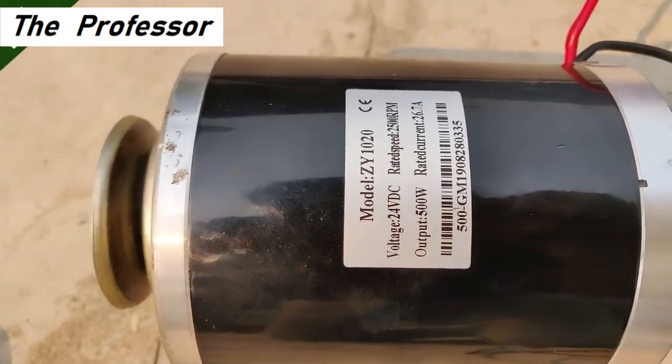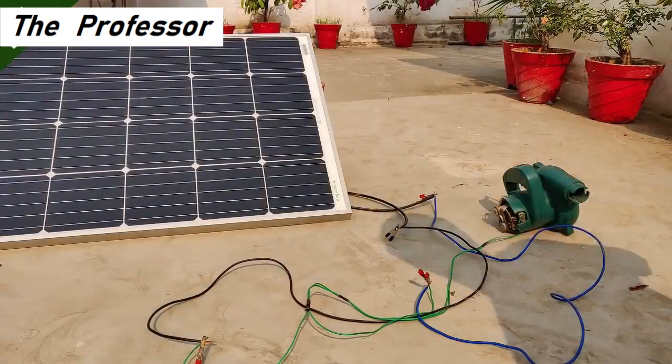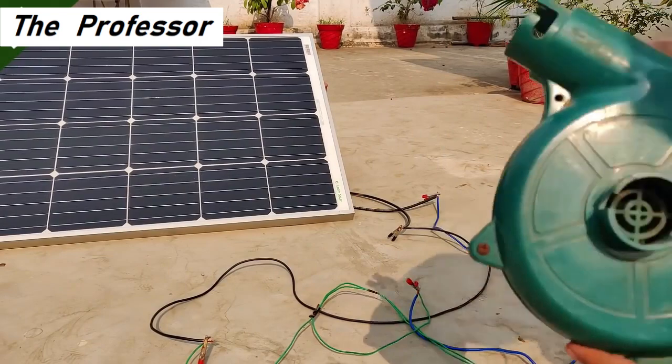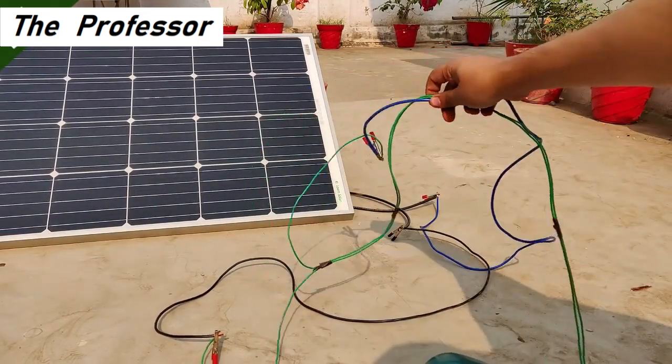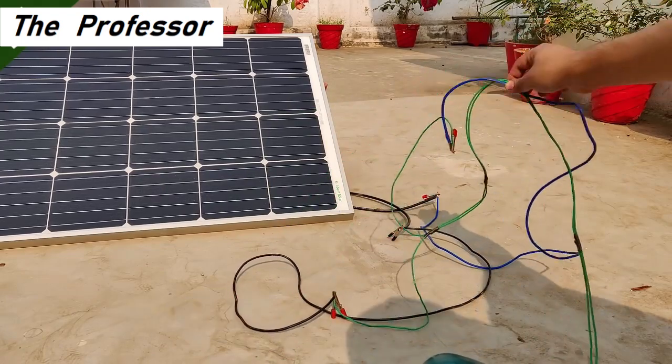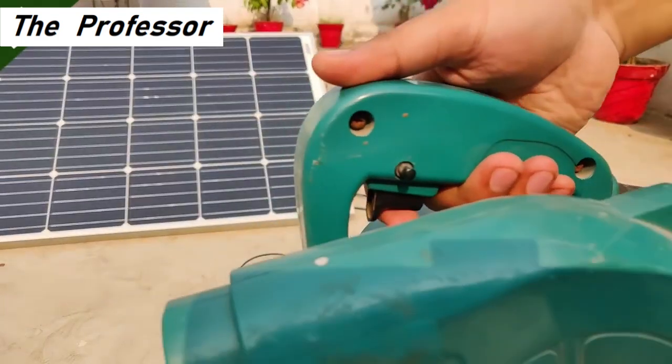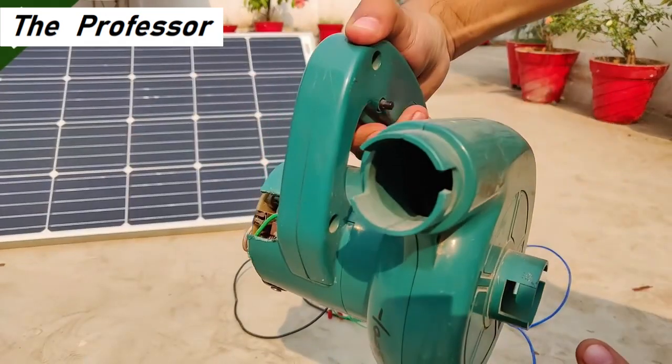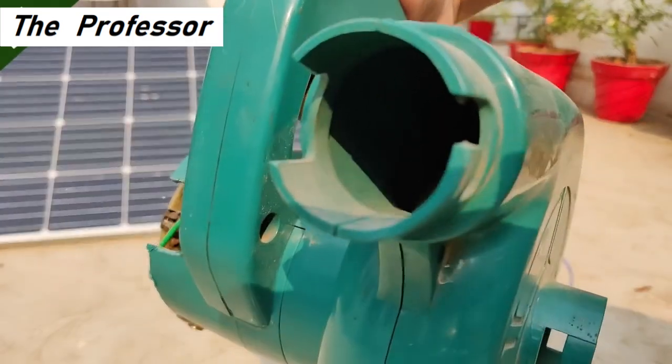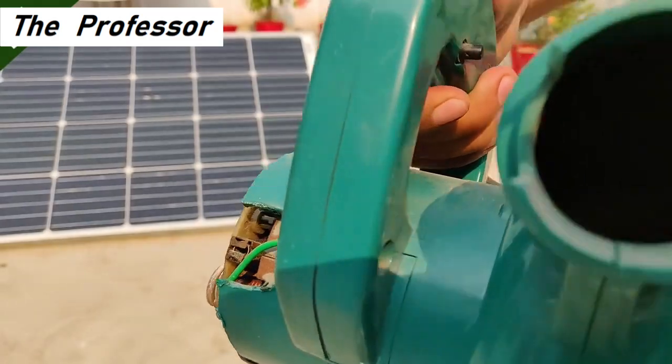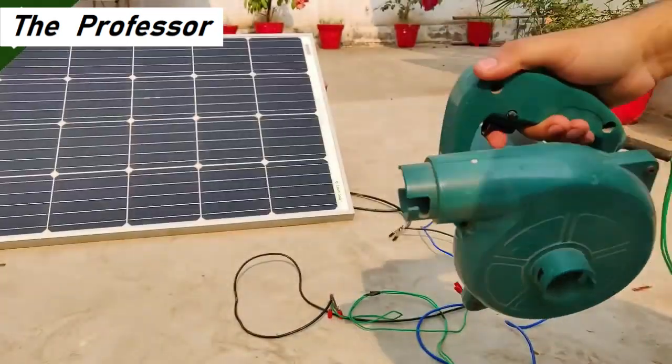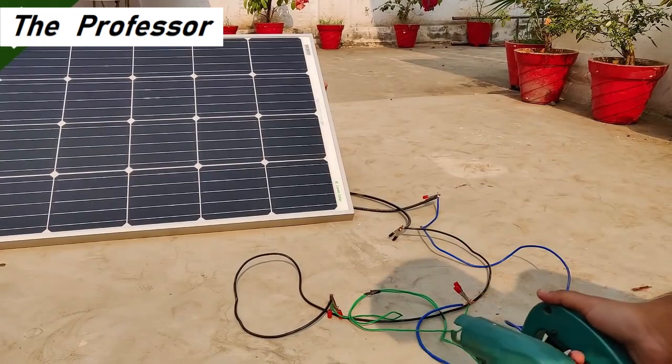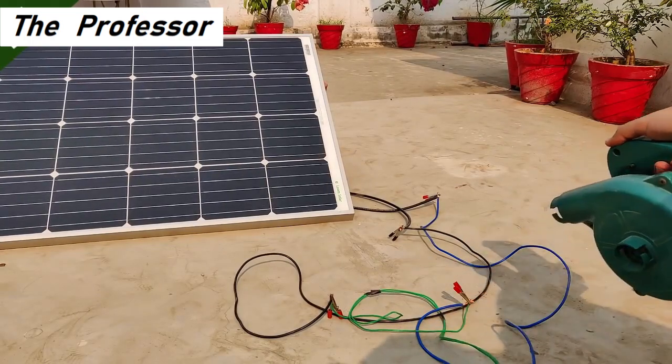I've connected the wires of this blower. These green wires have been connected to the solar panel wire extension. Now let's test how it runs. Very high speed. Let's see how fast it blows the air.